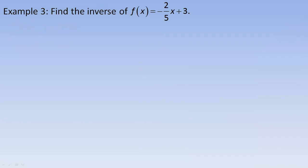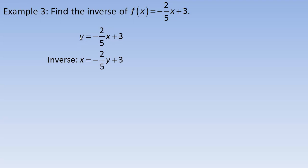Now for an algebraic example: find the inverse of f(x) = -2/5 x + 3. To simplify, I'll write y = -2/5 x + 3. To find the inverse, we switch x and y, giving x = -2/5 y + 3. That equation actually is the inverse, but by convention we solve for y. First, subtract 3 from both sides: x - 3 = -2/5 y.